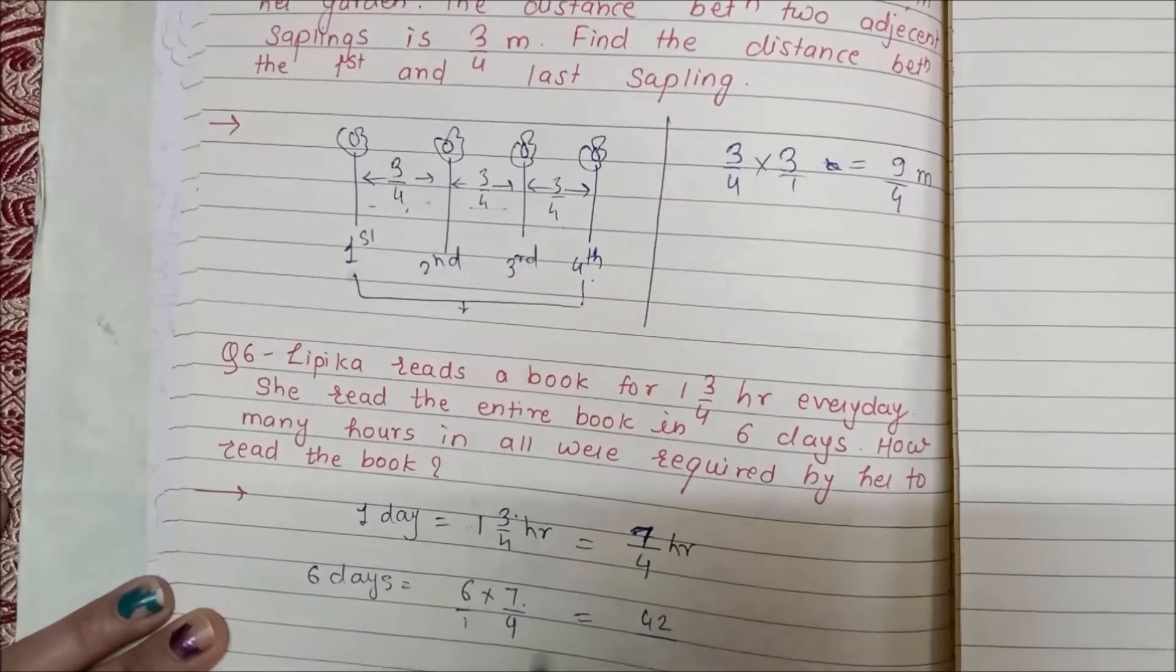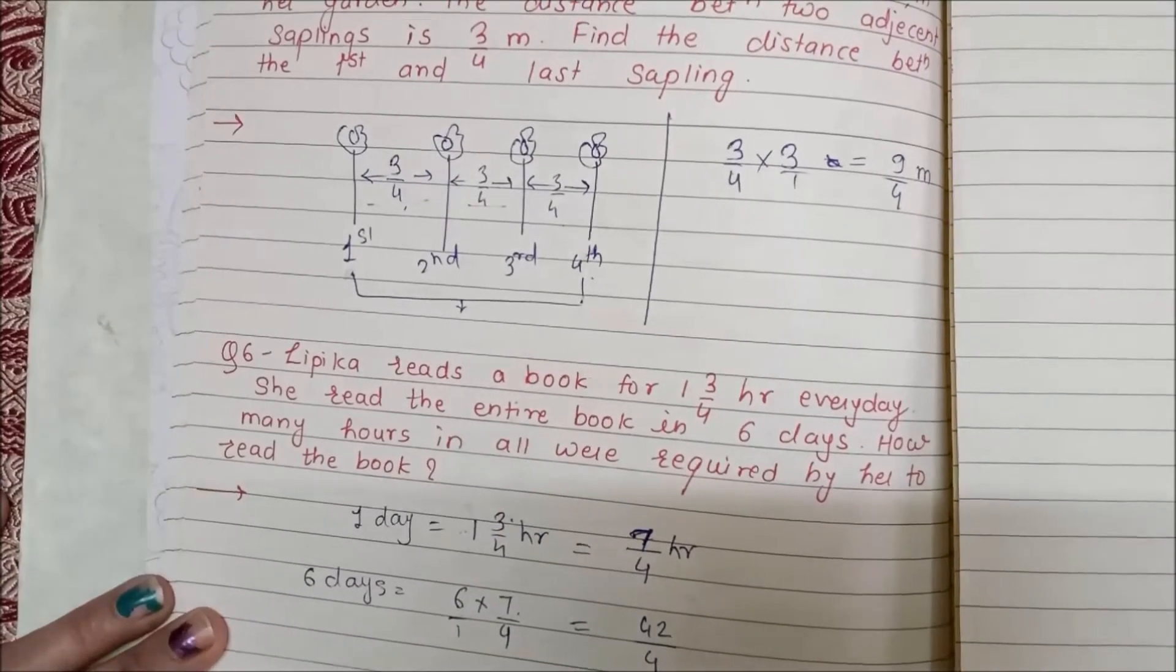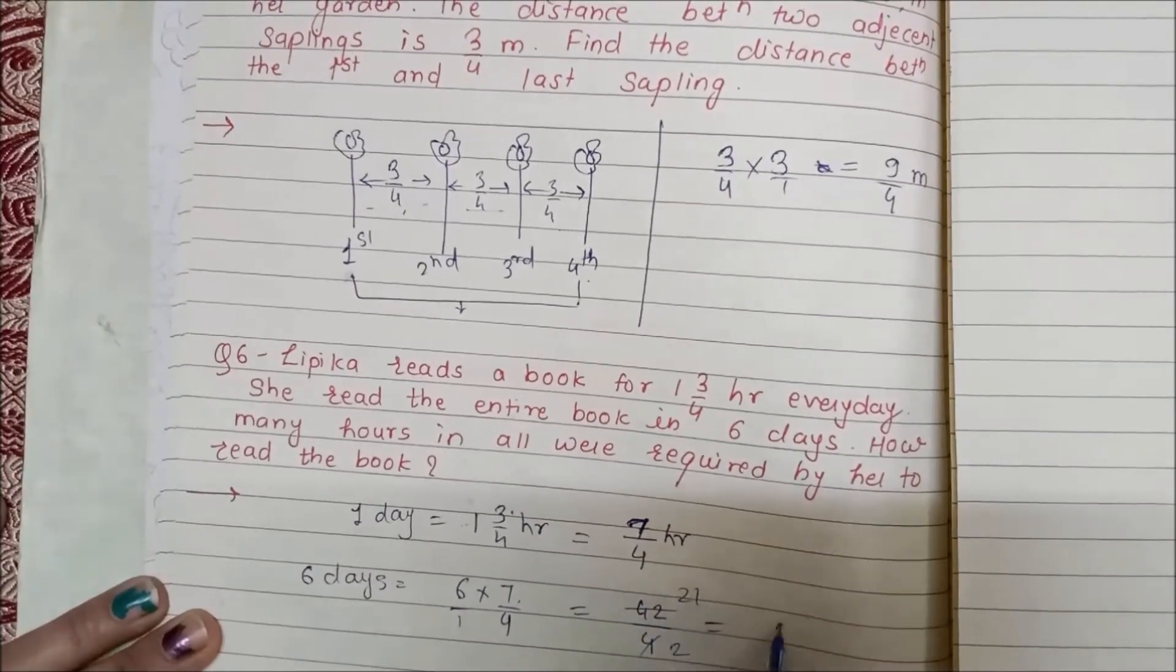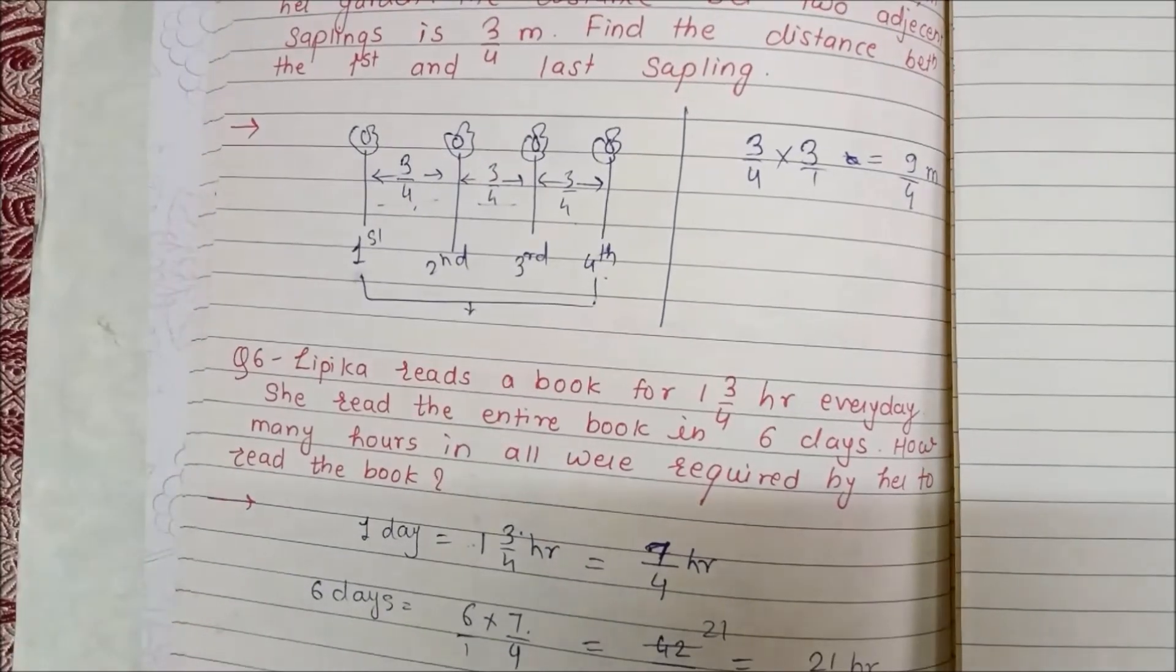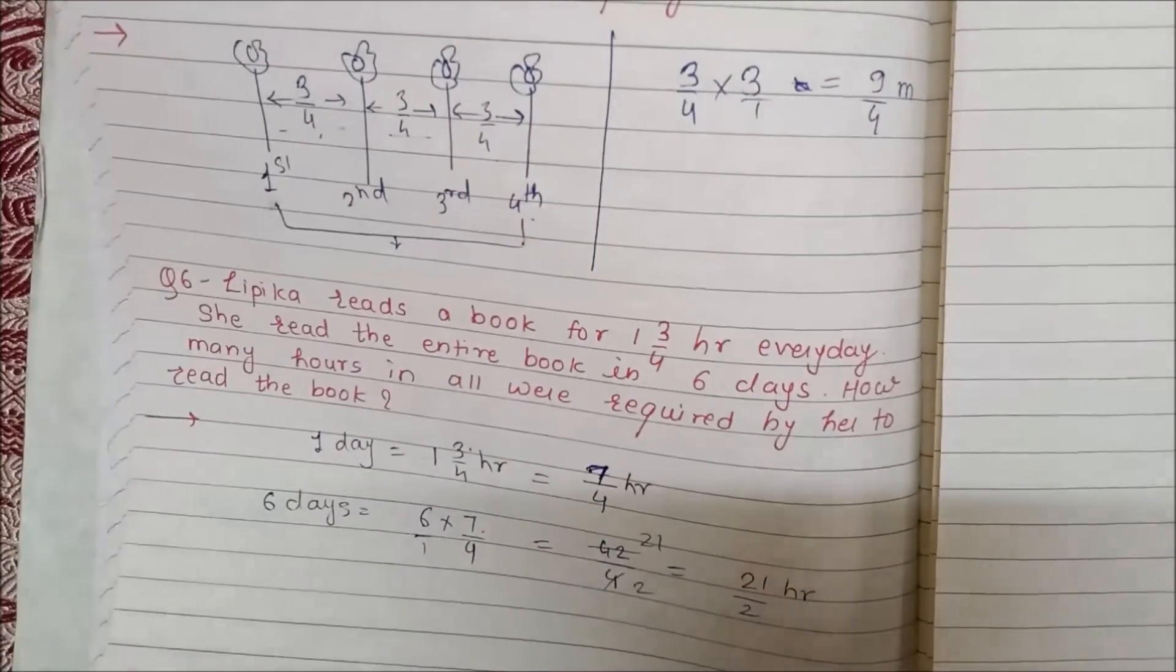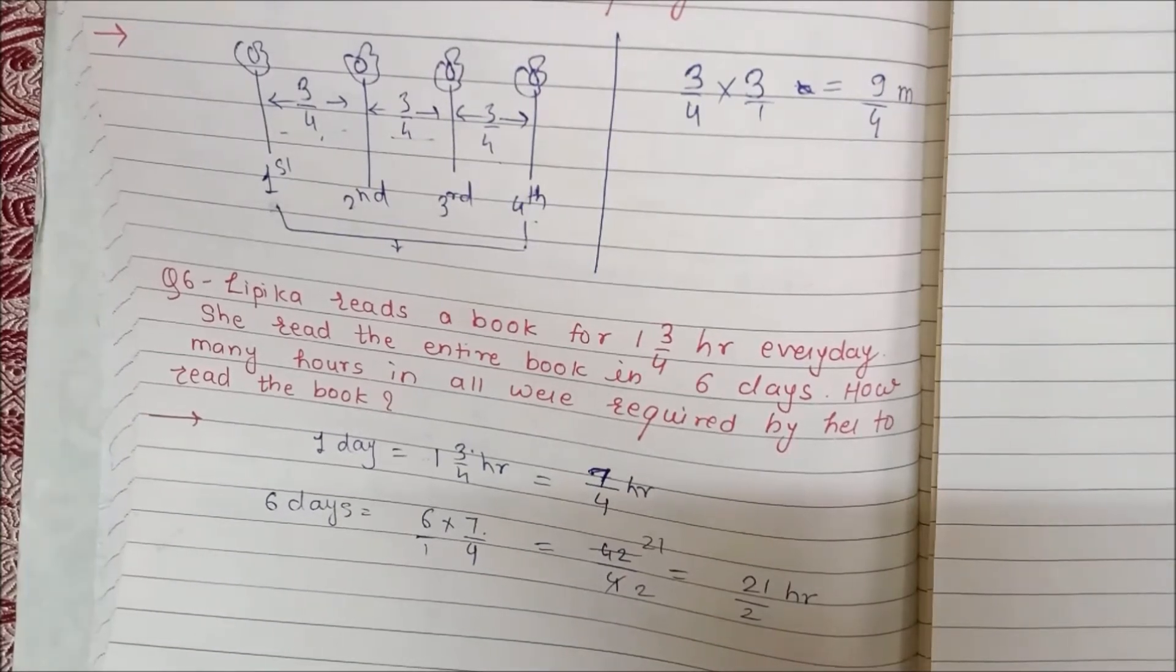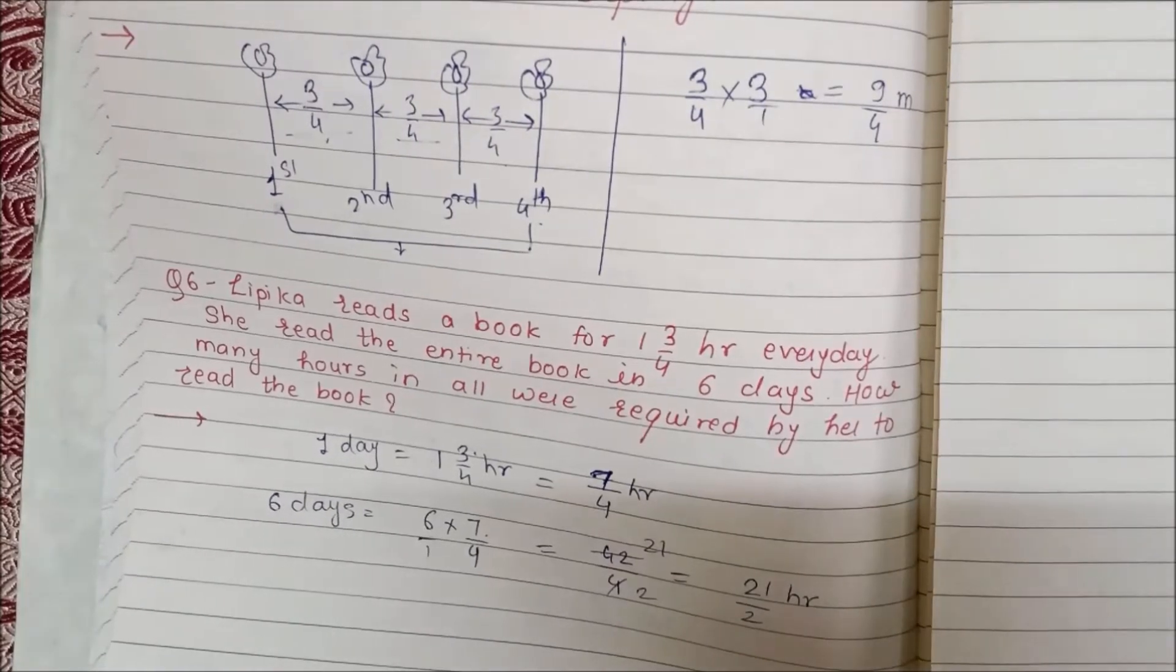For Question 6, we have 7 upon 4, which is a mixed fraction we have to convert.